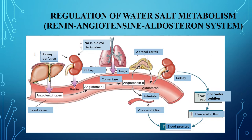The center of water-electrolyte regulation is located in the anterior part of the hypothalamus. Regulation of water metabolism consists of central and efferent stages. Impulses from various receptors — chemoreceptors, osmoreceptors, baroreceptors, thermoreceptors — located in mucous membranes of the digestive tract, blood vessels, and other organs are transmitted to hypothalamic neurons. These impulses are transmitted to departments of the cerebral cortex involved in the emergence of the feeling of thirst and water control.